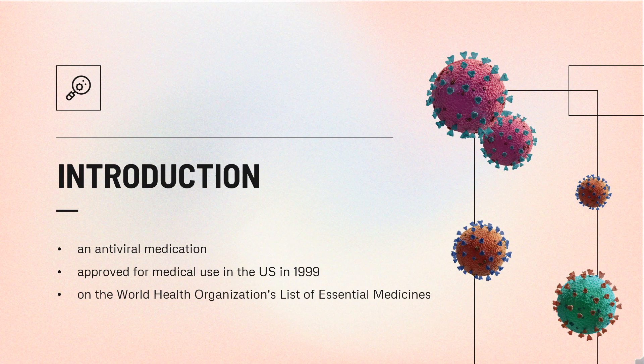Oseltamivir, sold under the brand name Tamiflu, is an antiviral medication used to treat and prevent influenza A and influenza B — viruses that cause the flu. Many medical organizations recommend it in people who have complications or are at high risk of complications within 48 hours of first symptoms of infection.